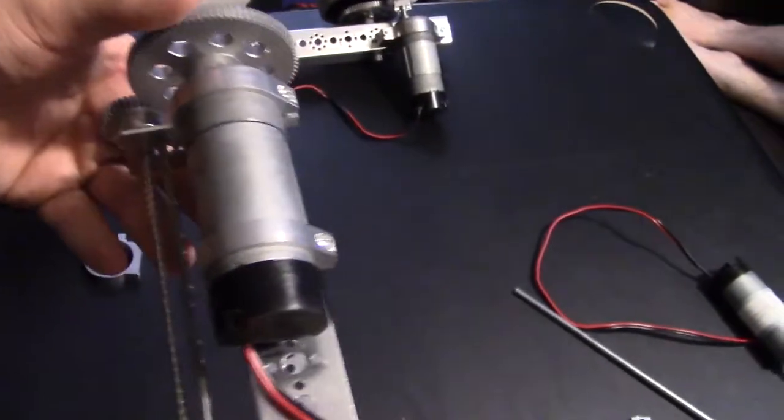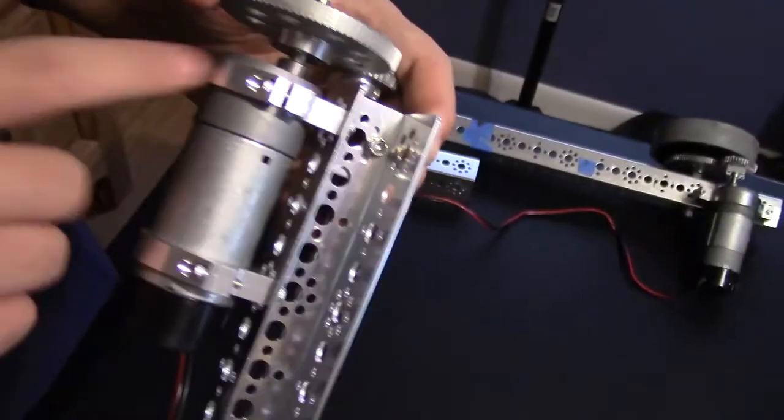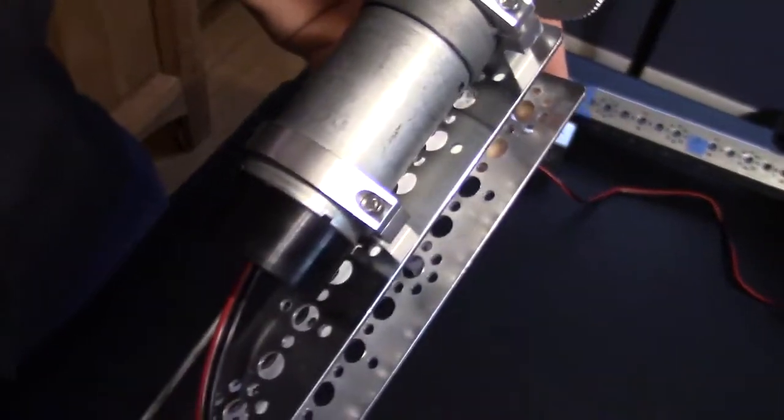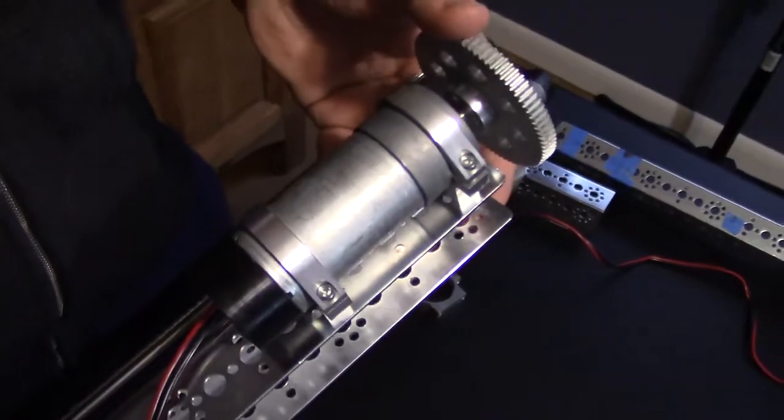This isn't a drivetrain, but here you can see we used two of the Servo City motor mounts. We put one on the front and one on the back. This definitely holds the motor in place, and you can see these gears fit together quite snugly.